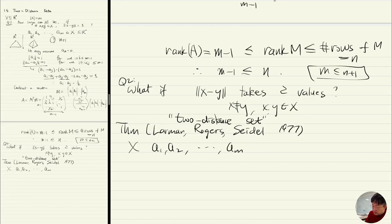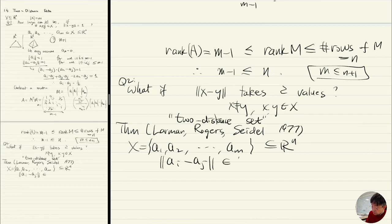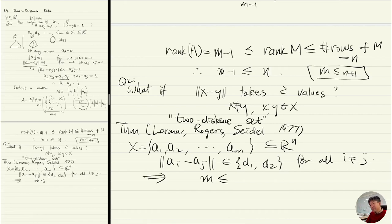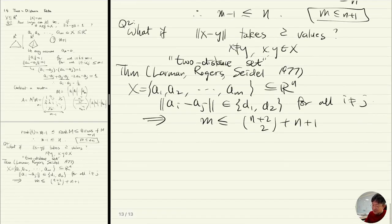Let's say X is a set of points in R^n where |a_i - a_j| takes value d_1 or d_2 for all i ≠ j. Then m is less than or equal to something. If the distance takes only two possible values, then the number of points is at most quadratic in n.